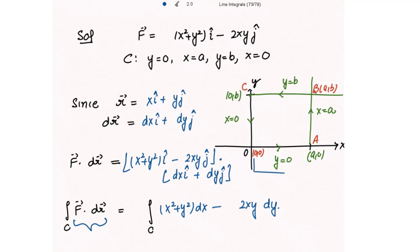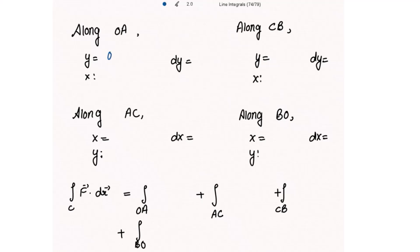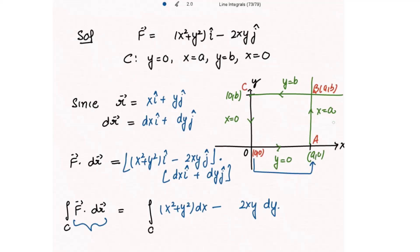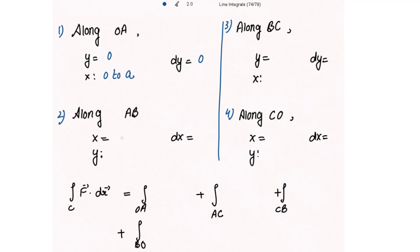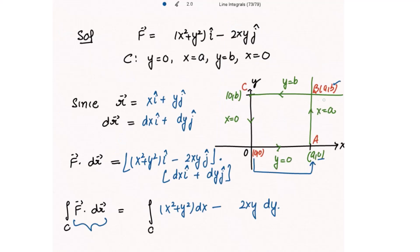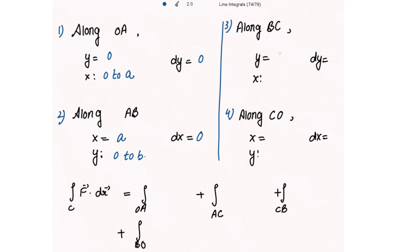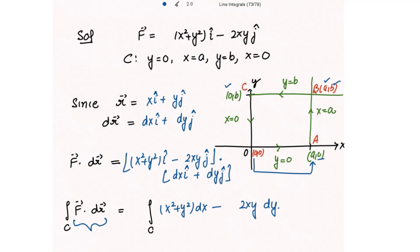Along OA: y equal to 0, so dy is also 0, and x varies from 0 to a. Along AB: x is constant equal to a, so dx is 0, and y varies from 0 to b. Along BC: y equal to b is constant, so dy is 0, and x varies from a to 0. Along CO: x is 0, so dx is also 0, and y varies from b to 0.